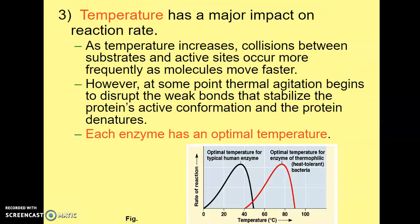The third thing that can affect reaction rate is the temperature. Temperature has a huge impact on reaction rate. As the temperature increases, substrates and enzymes can collide more frequently as the molecules are moving a lot faster. But at some point, the thermal agitation or the huge increase in temperature can actually begin to disrupt the weak bonds that are needed to stabilize the substrate into the active site, as well as stabilize the protein's active conformation. If the temperature is too increased or decreased, then the protein will actually denature. Therefore, each enzyme has its own optimal temperature.